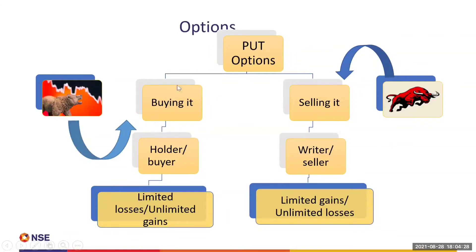The buyer of a put option can be compared to a person who buys insurance. If we buy a vehicle, we buy insurance because we know we will pay a premium, and in case the vehicle is damaged, the insurance company will compensate us and take care of the expenses. On the other hand, the seller of a put option is like the insurance company — they collect insurance premiums from millions of investors, knowing that a certain percentage will claim the insurance money while a large percentage will not.